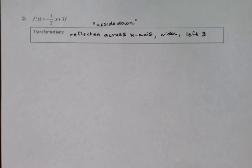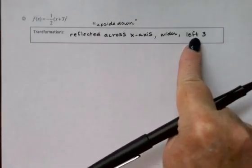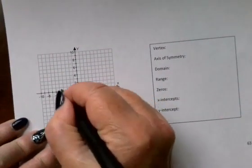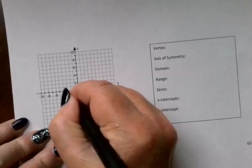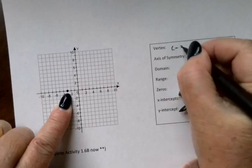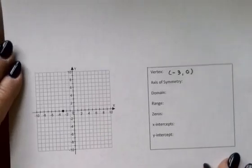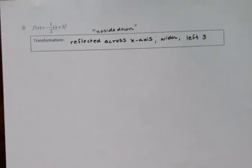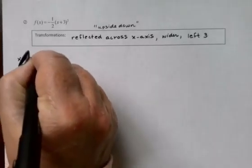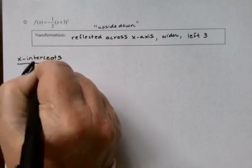So for right now, let's just see if we can plot the vertex. The only thing that changed our vertex was this left 3. So from the origin, if I go left 3, I will be right there. And my vertex is at the point (-3, 0). All right. Next, I'm going to work on my intercepts.